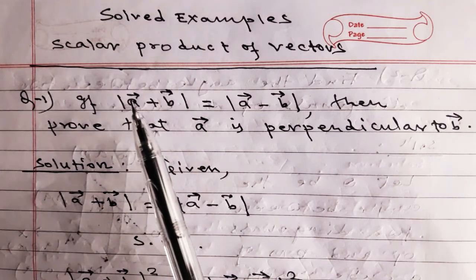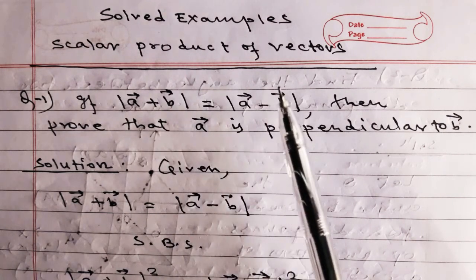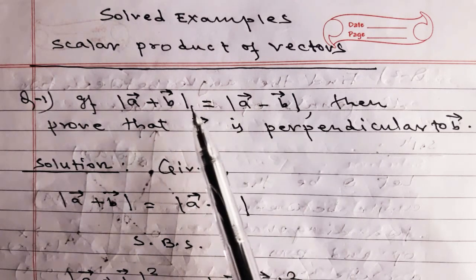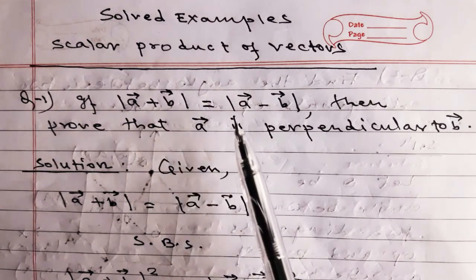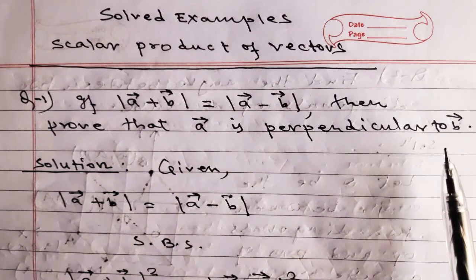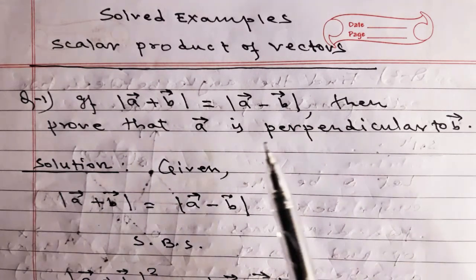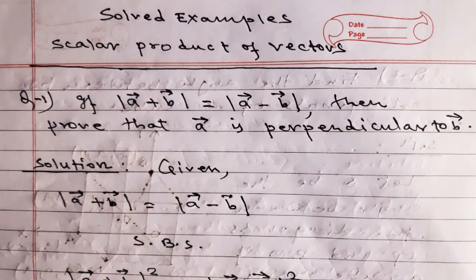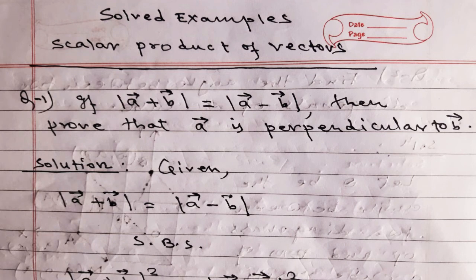So if the magnitude of vector A plus B equals the magnitude of vector A minus B — that is, the sum equals the difference in magnitude — then vector A is perpendicular to vector B. Dear students, this video discusses seven different types of important questions. Please do not skip the video. Subscribe to our YouTube channel Corner Mass Academy for daily new updates. Let's go to question number two.